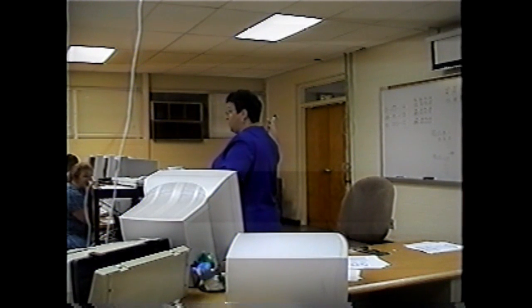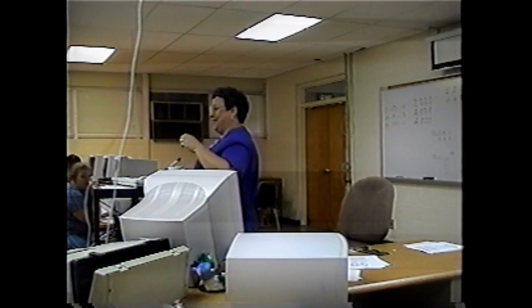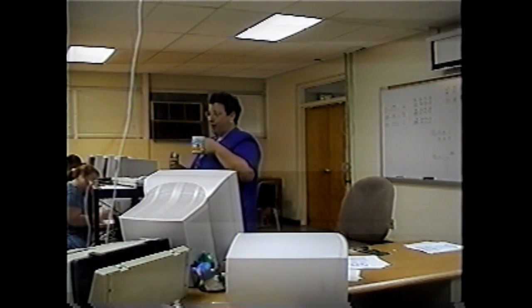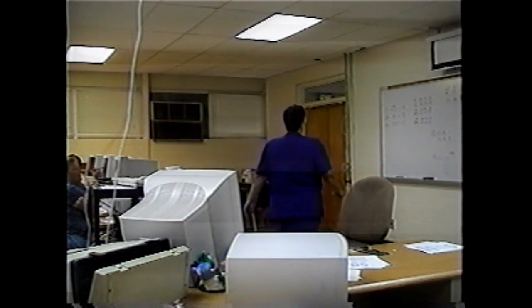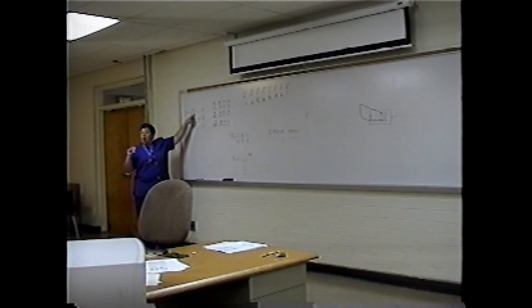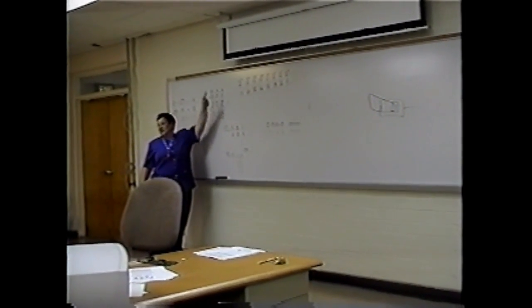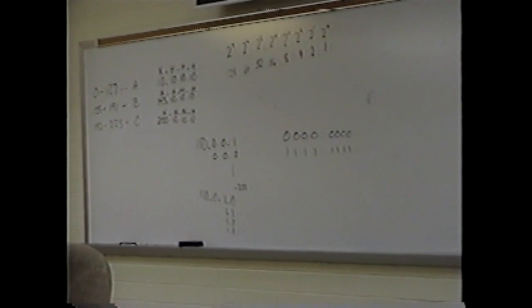Everybody got a feel for how to come up with your little ranges? You need to recognize an IP address based upon that first number in the octet. You also need to be able to spout this out — if I say to you it's a Class B, you should immediately think: network dot network dot host dot host.